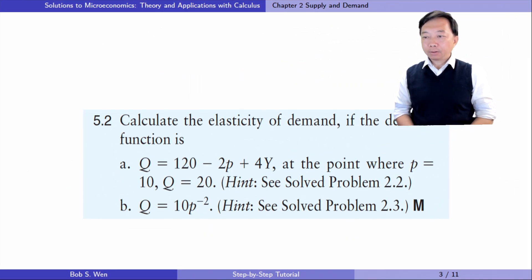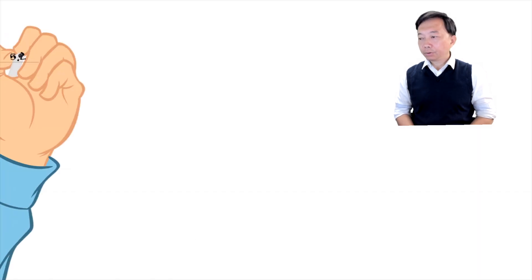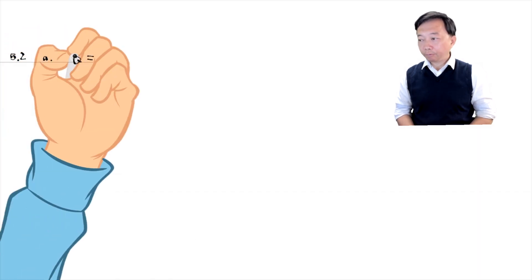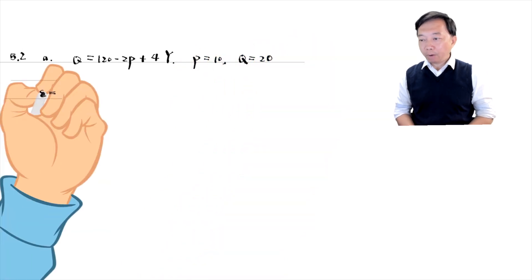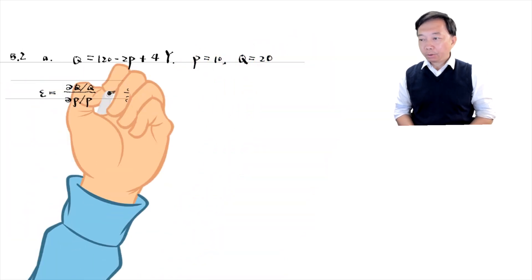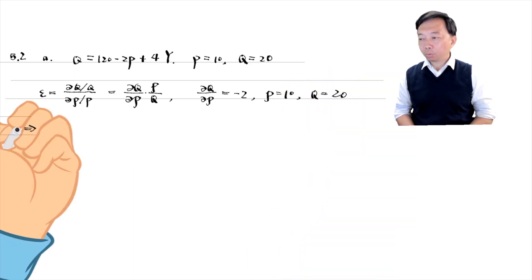Let's find answers to exercise 5.2. Calculate the elasticity of demand if the demand function is as follows. In part one, it is a linear demand function. We use the definition of the price elasticity of demand and substitute all the values into the formula. The elasticity is minus 1.